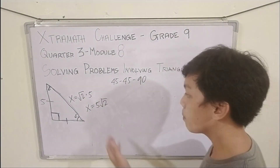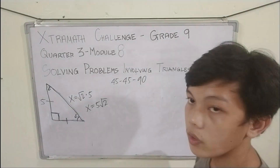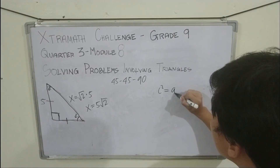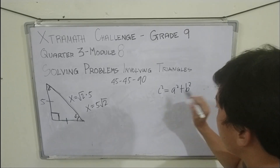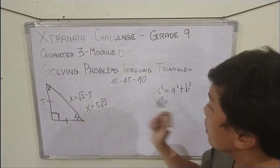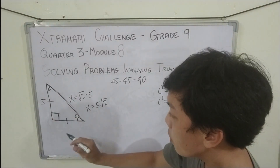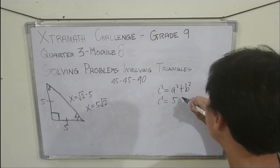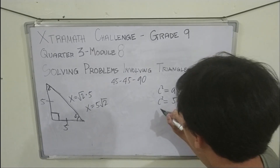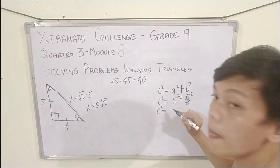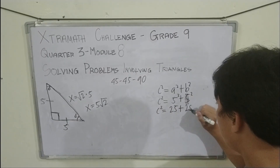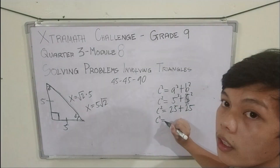To prove our answer, we're going to use the Pythagorean theorem. So c squared is equal to a squared plus b squared. Our a is 5, and since the legs are congruent, b is also 5. So c squared is equal to 5 squared plus 5 squared, which is 25 plus 25, giving us c squared equal to 50.